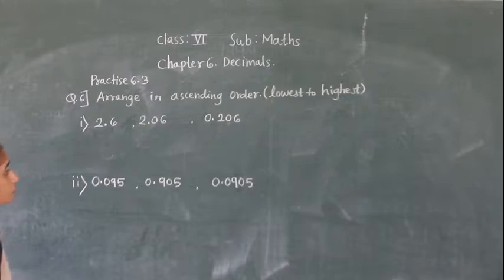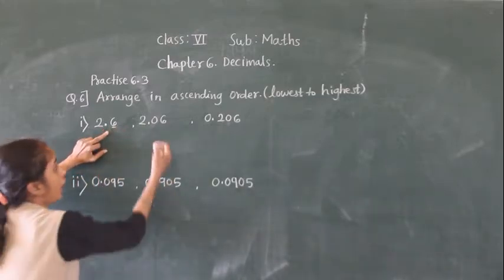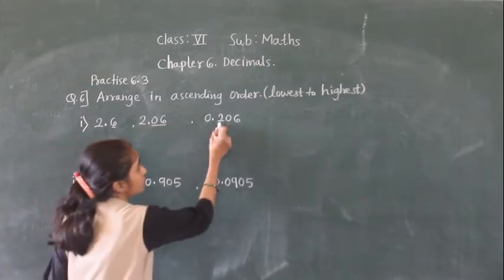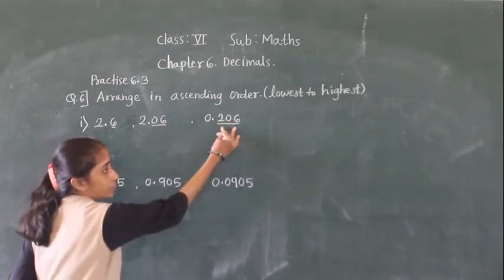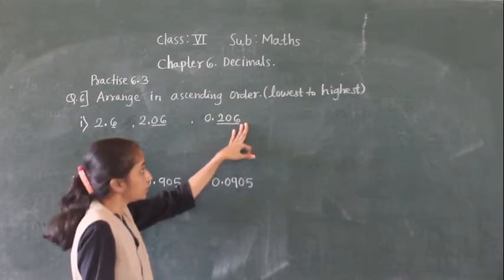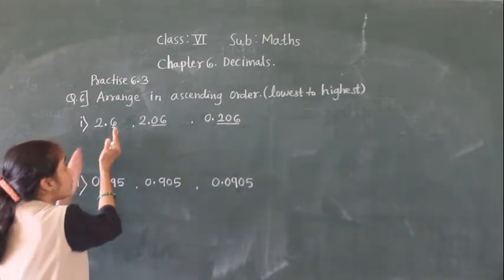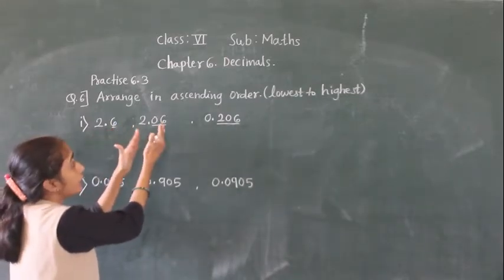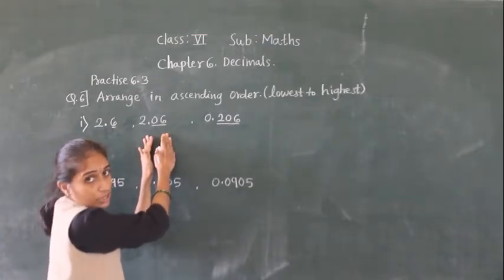First, observe the digits after the decimal point. Here one digit is given, here two digits are given, and here three digits are given. The maximum number of digits after the decimal point is 3. So in this number and this number also, we have to make three digits after the decimal point.